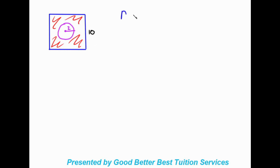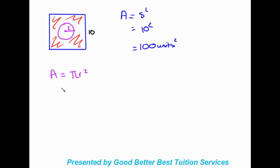Moving on to the next example: we have a square and a circle. The circle sits nicely in the center of the square and the area around it is all shaded. First, the area of the main shape — side squared: 10 squared gives 100 units squared. Then for the circle, area equals pi r squared. The radius is given as 2, so it's pi times 2 squared, which equals 4 pi units squared.